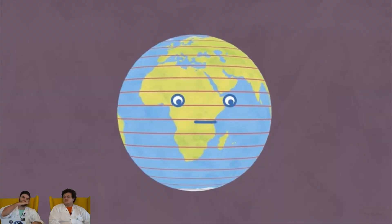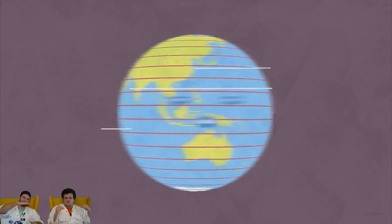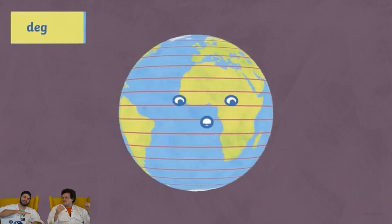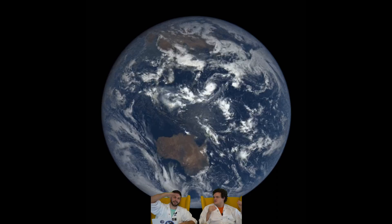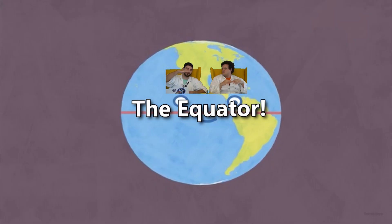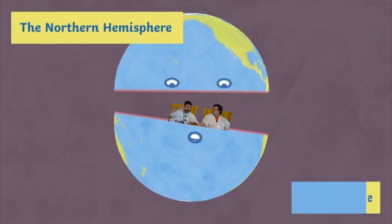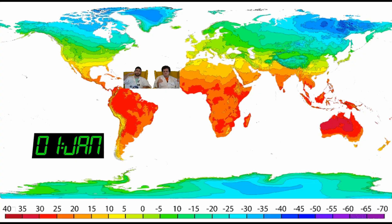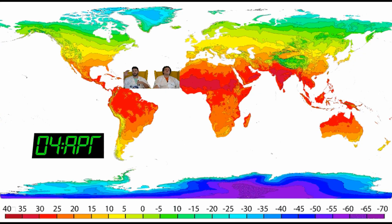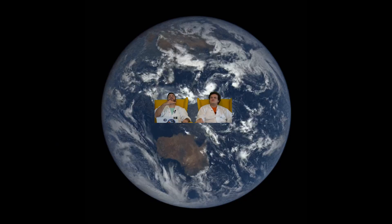Latitude are the horizontal lines that you would see on a globe or a map — they dissect parts of the earth. The most famous one is the equator, right in the middle. When you're in the middle, you're in a warmer climate zone — you get more heat from the sun.